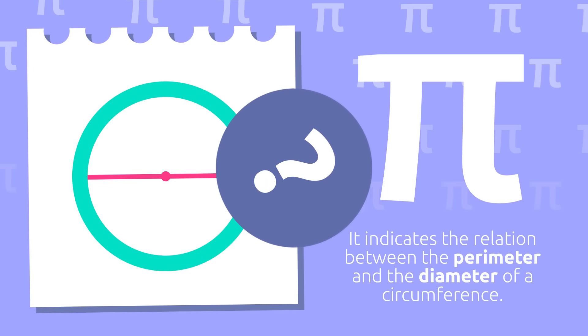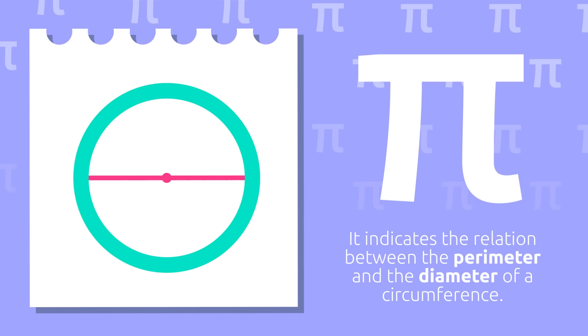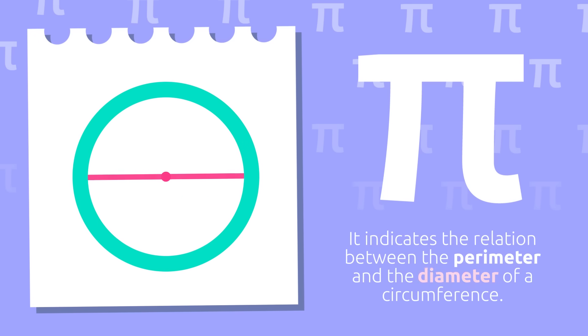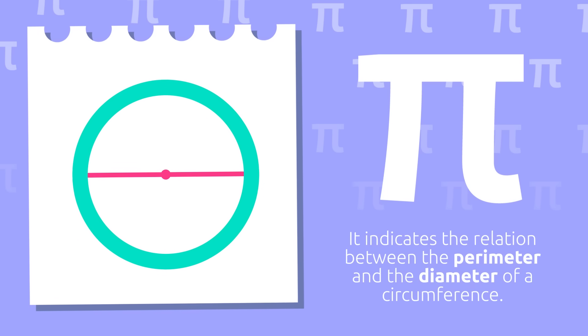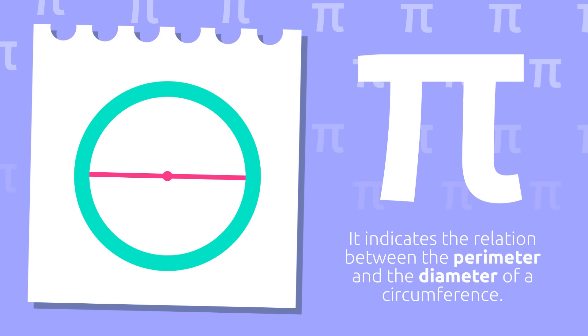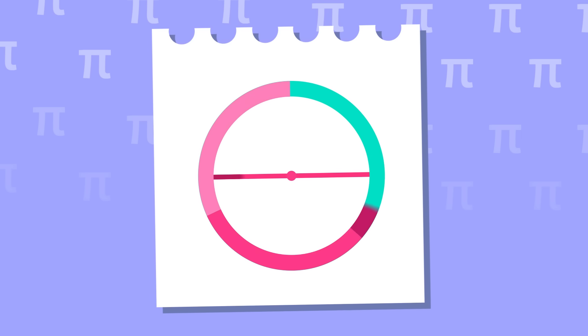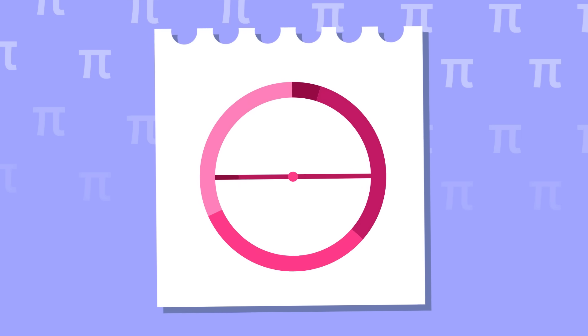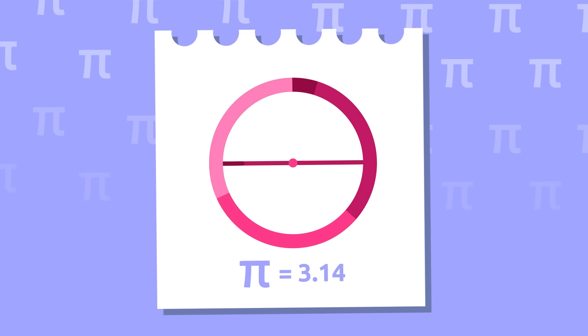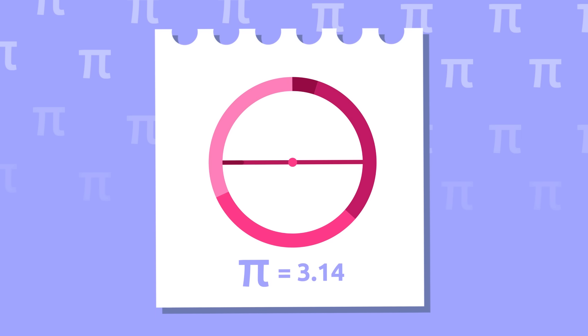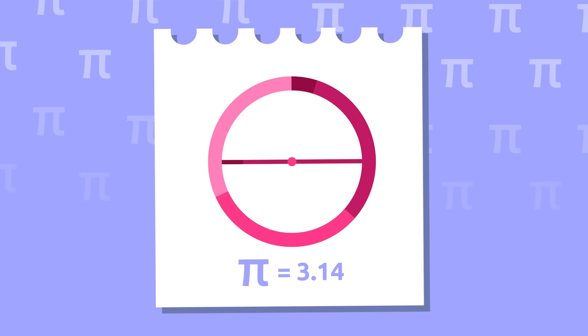But how can we describe this relation? It's about fitting the diameter as many times as possible into the perimeter of the circumference. Let's look here: one, two, three, and a little bit more. That's it! We can fit three diameters into the circumference and a small part, 0.14.